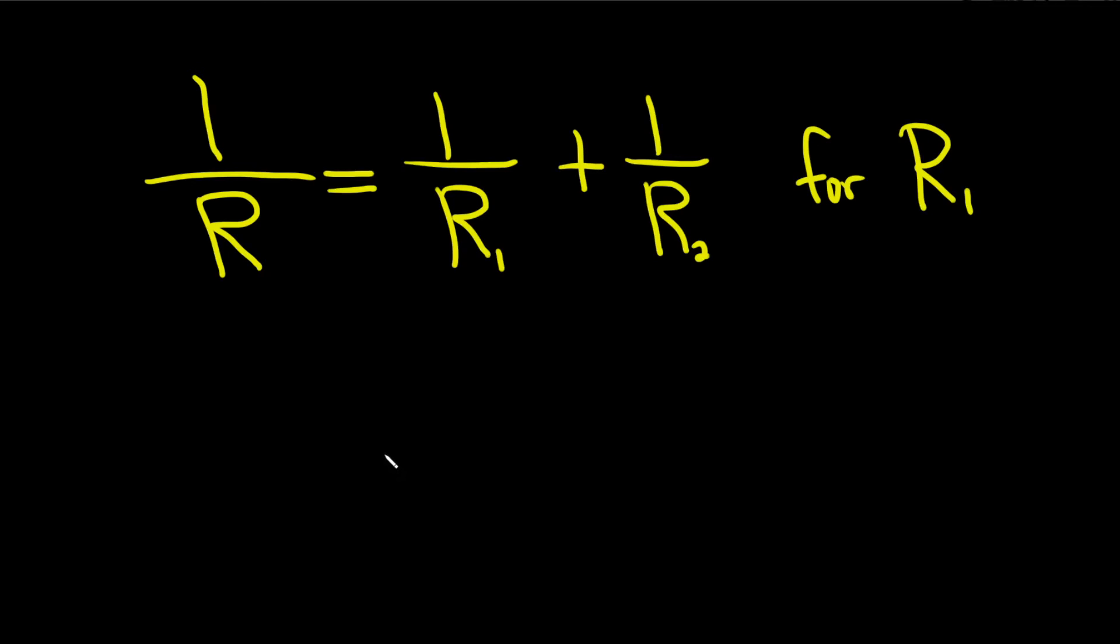In this problem we have a literal equation, 1 over R equals 1 over R1 plus 1 over R2 to solve for R1. It's actually pronounced R sub 1, I'm just saying R1 to save myself a word. So R1 is down here and we need to find it.